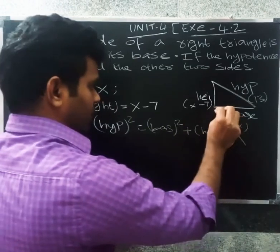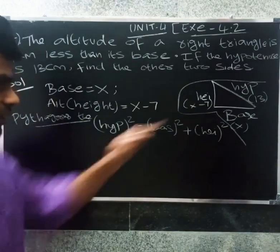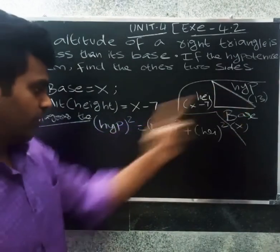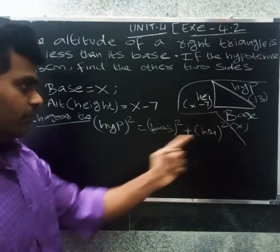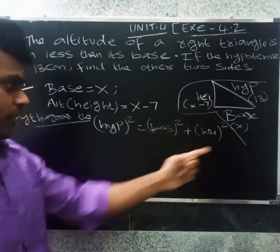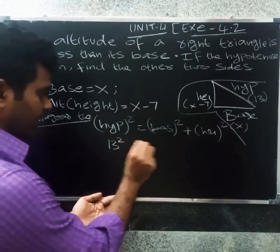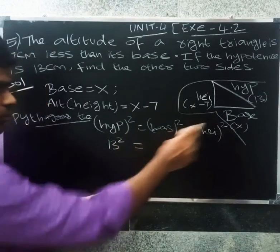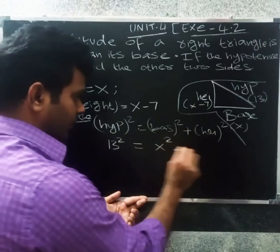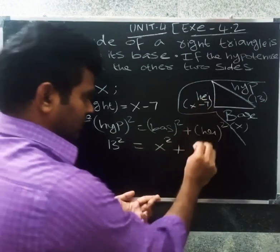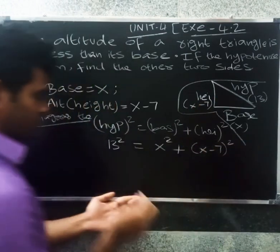The Pythagorean theorem concept is: the slanting side squared equals base squared plus height squared. So hypotenuse squared: 13 squared equals x squared plus (x minus 7) the whole square.